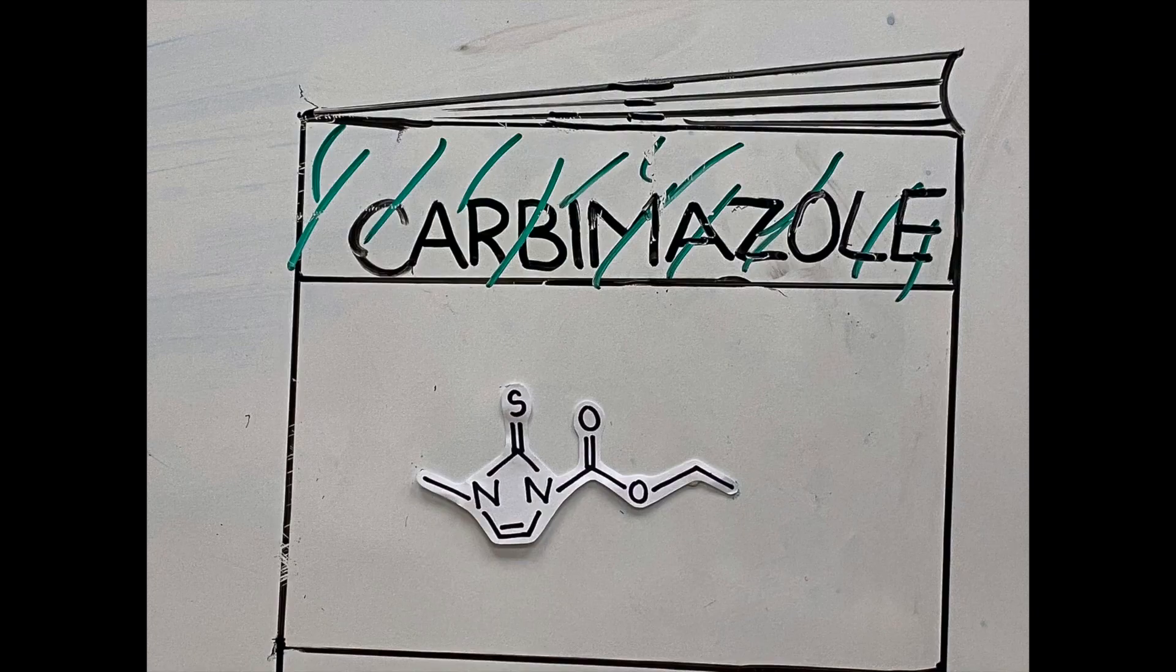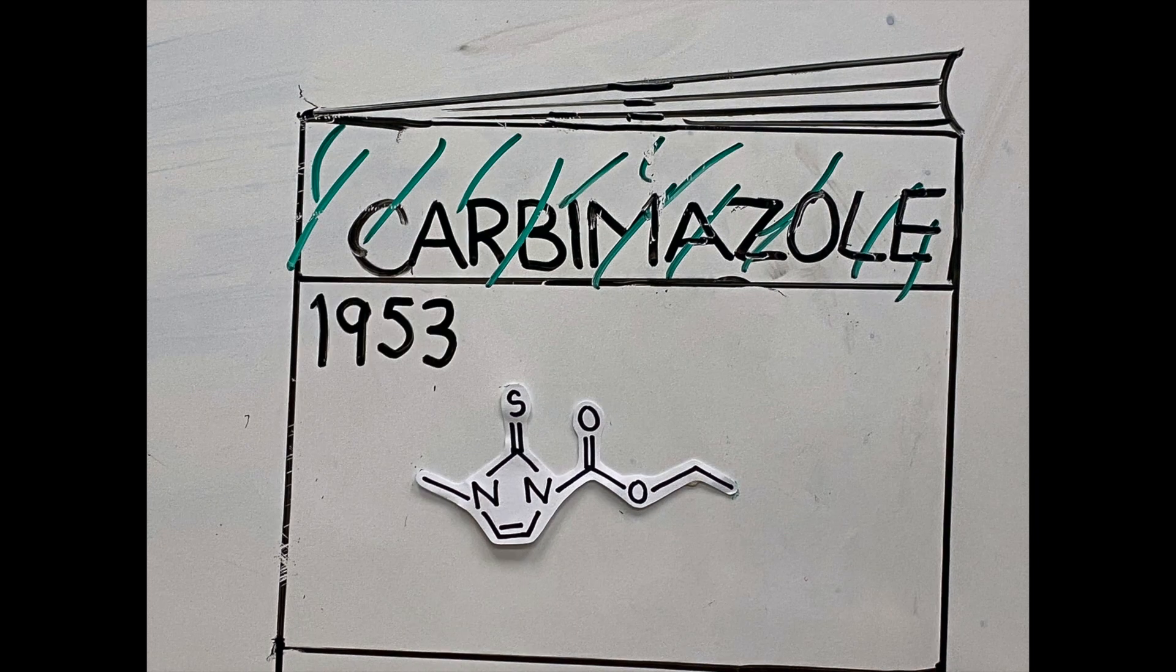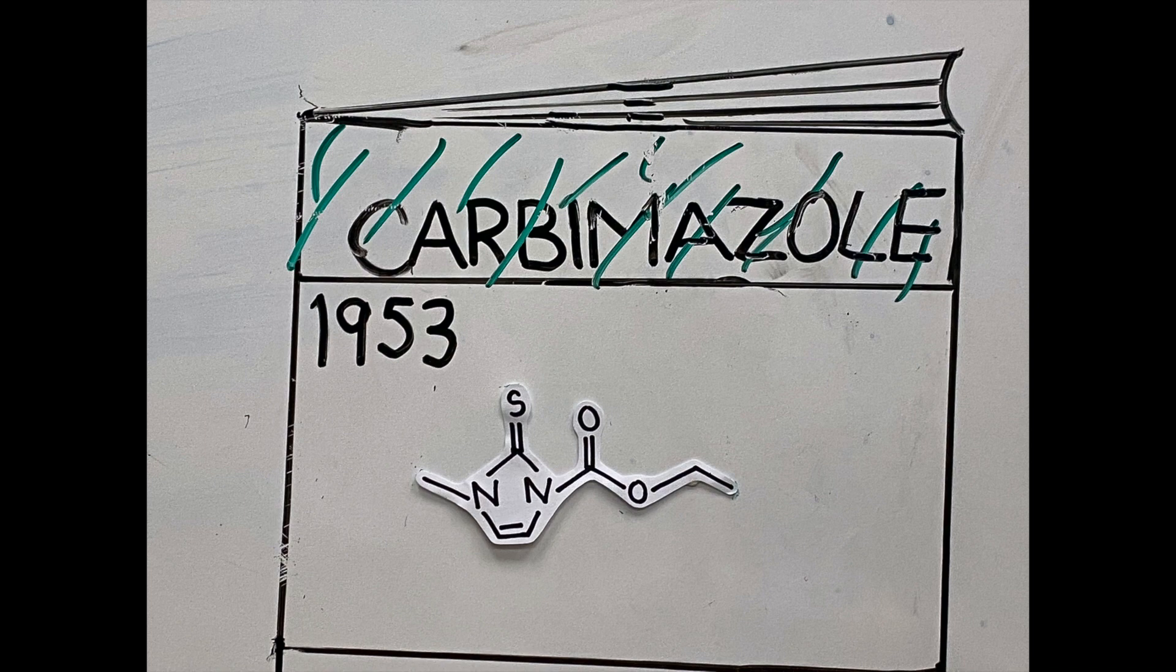The first paper introducing carbamazole was published in 1953, where it was called neomercazole, since it was developed as a prodrug of mercazole, which is more commonly and modernly known as methimazole.